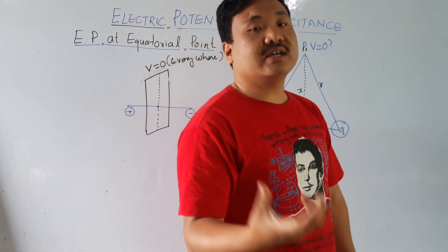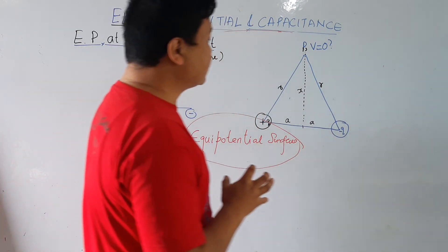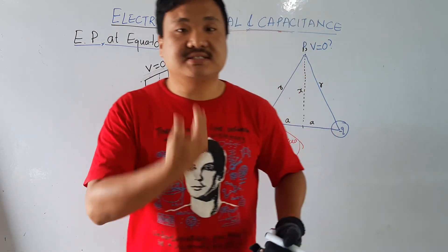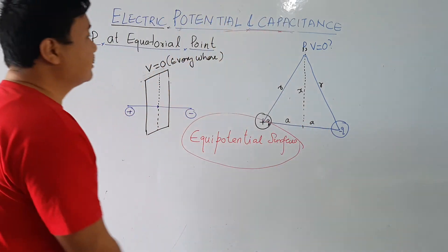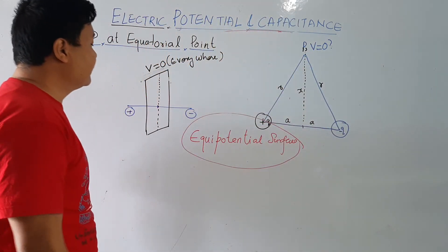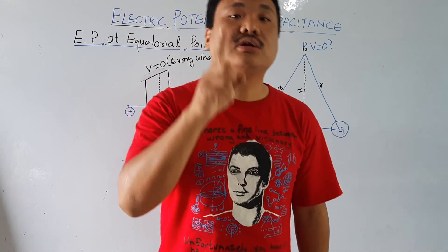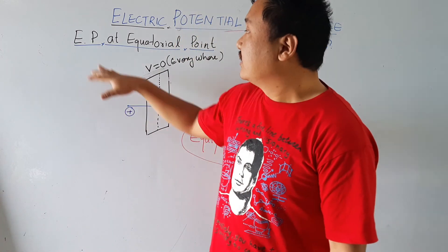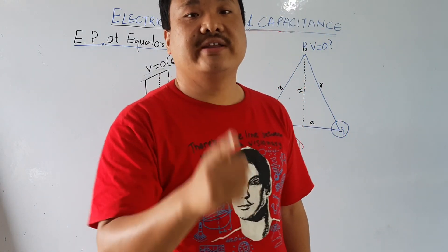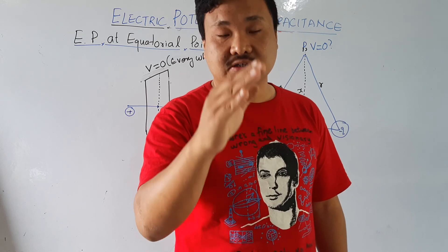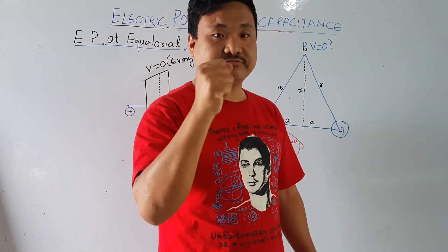Two charges make a plane and that is the equipotential surface. At the equatorial point the electric potential is zero. In the next lecture I will solve one or two questions on electric potential, and remember that kind of question is very important — I am very sure in the examination that kind of question will come. Thank you.